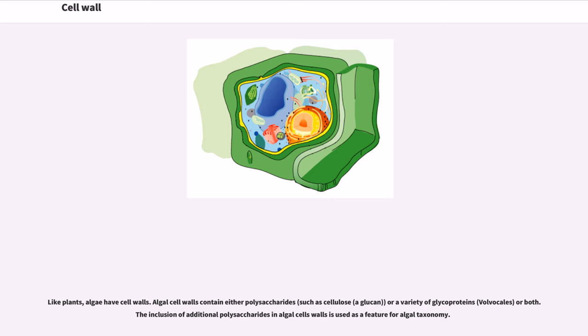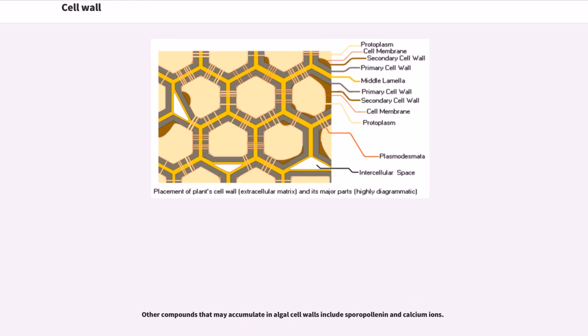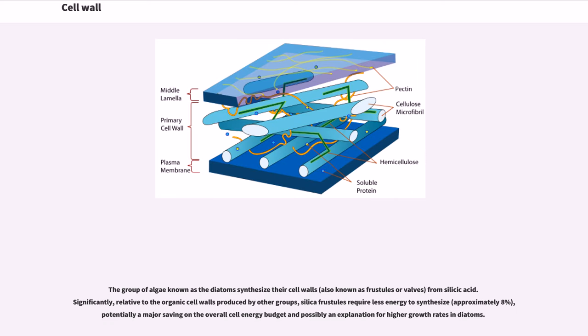Like plants, algae have cell walls. Algal cell walls contain either polysaccharides, such as cellulose, a glucan, or a variety of glycoproteins, volvocales, or both. The inclusion of additional polysaccharides in algal cell walls is used as a feature for algal taxonomy. Other compounds that may accumulate in algal cell walls include sporopollenin and calcium ions. The group of algae known as the diatoms synthesize their cell walls, also known as frustules or valves, from silicic acid. Significantly, relative to the organic cell walls produced by other groups, silica frustules require less energy to synthesize, approximately 8%, potentially a major saving on the overall cell energy budget and possibly an explanation for higher growth rates in diatoms.